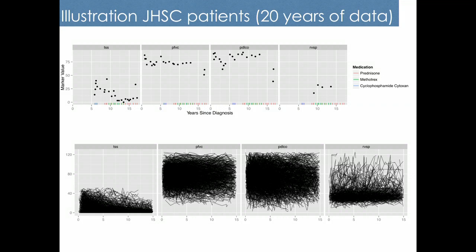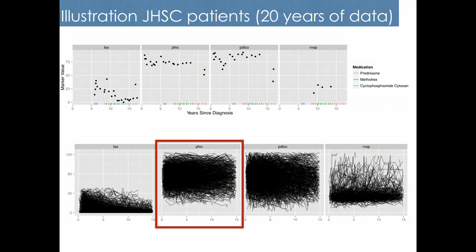Looking at an example individual, on the top I'm showing four different markers: skin measure, lung function, vasculature health, and heart health. If you put all individuals on a plot, all you see is a big mess. Looking at lung function alone in the population, there's so much heterogeneity it's not clear — is it that everybody is different, or is there some group structure we can exploit?